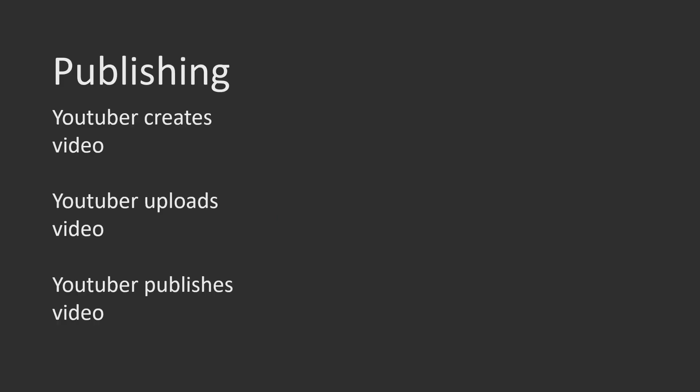The first part of this process is publishing, where the YouTuber creates the video. This technically happens before it gets to YouTube, but it is no less a part of this process. Then they upload that video to YouTube and finally publish it. A lot of videos remain in an unlisted or private state until the encoding, processing, tags, title, and description are all ready for the YouTuber to publish.